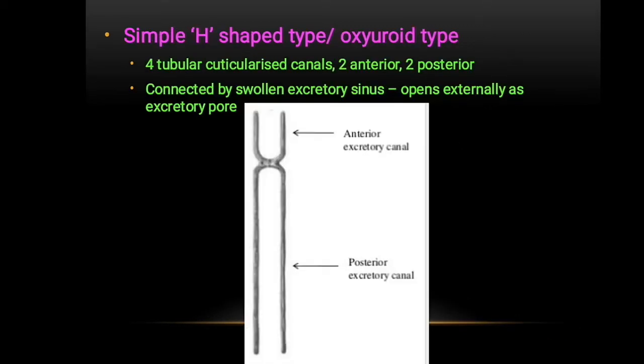Next is the simple H-shape or oxyuroid type. It also has four cuticularized canals — two anterior and two posterior. Importantly, the anterior canals are slightly shorter than the posterior ones, and the canals extend through the length of the body. No excretory glands are present here. Connected by a sinus, the excretory pore opens externally. Example: Oxyurata.